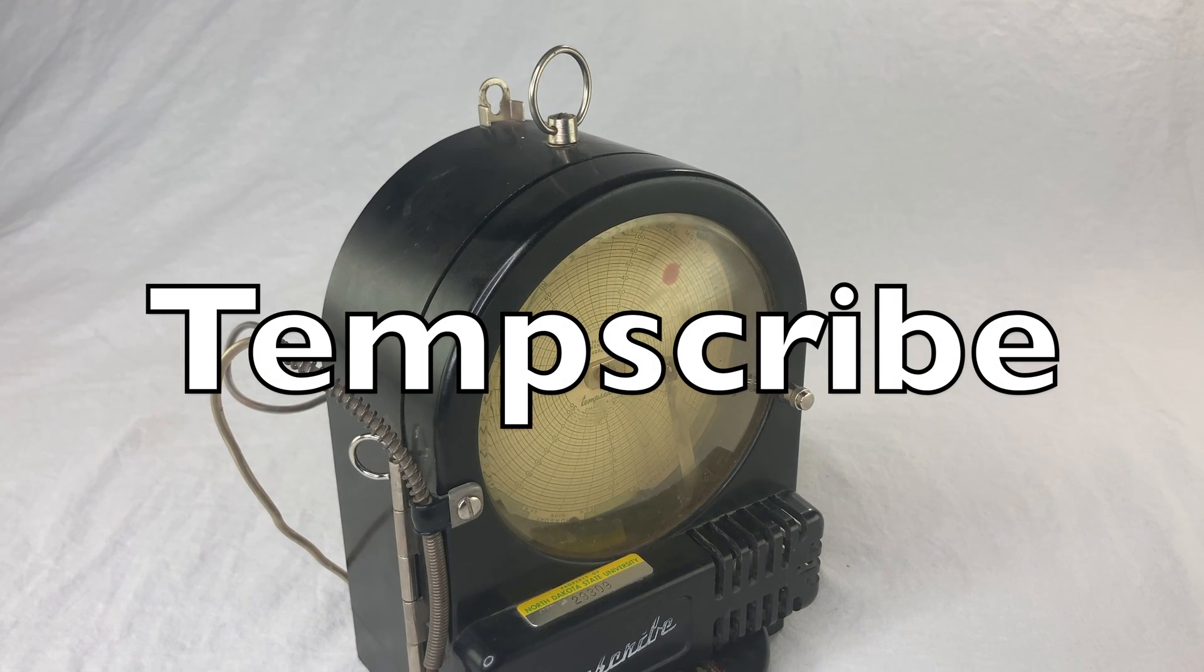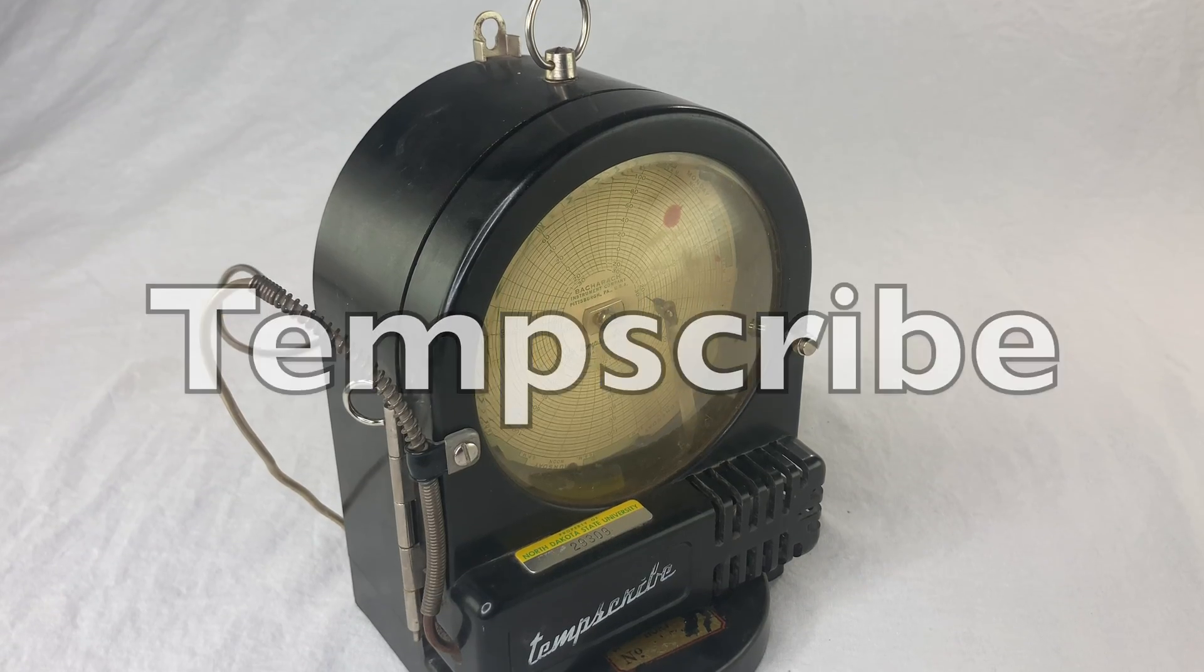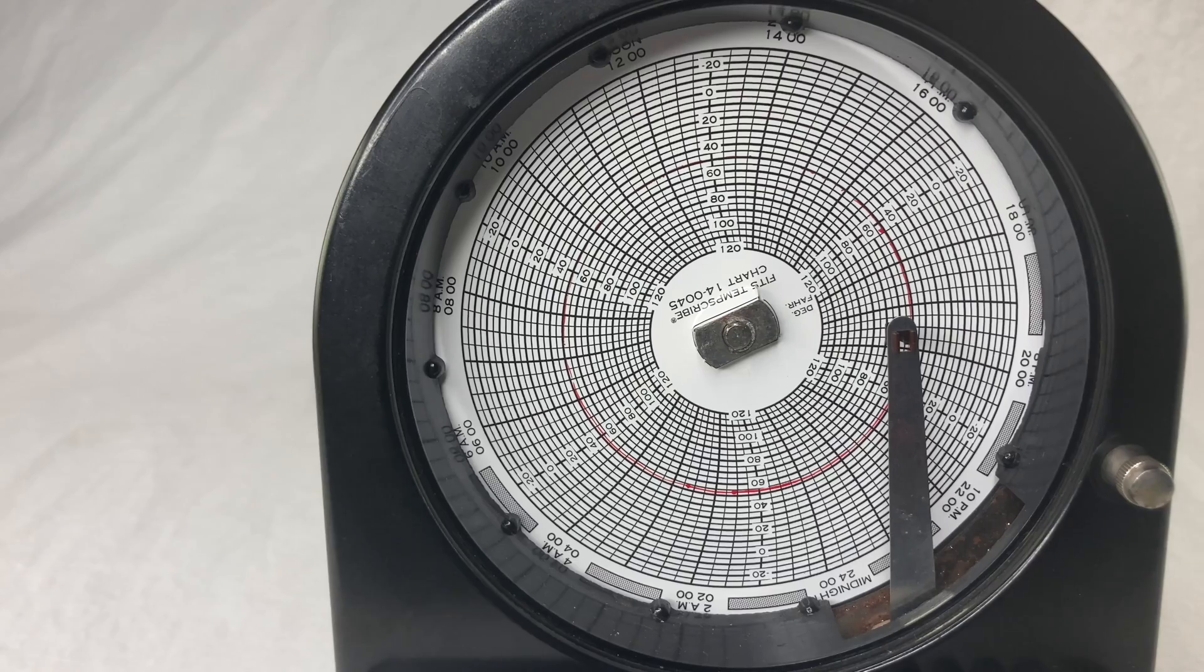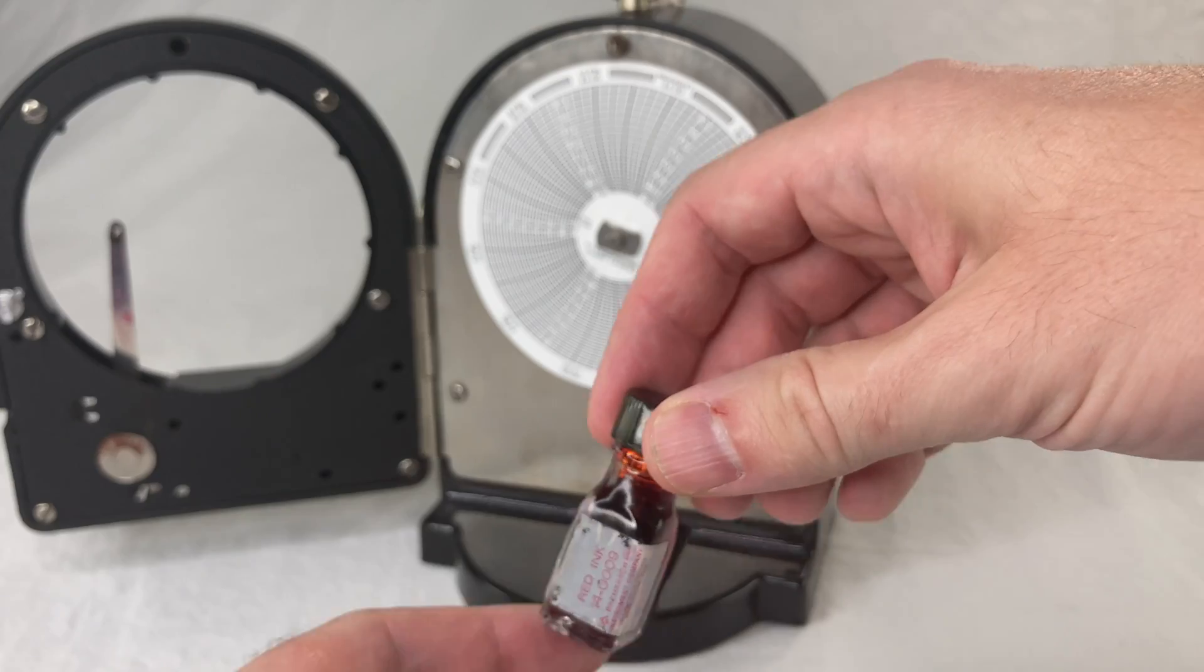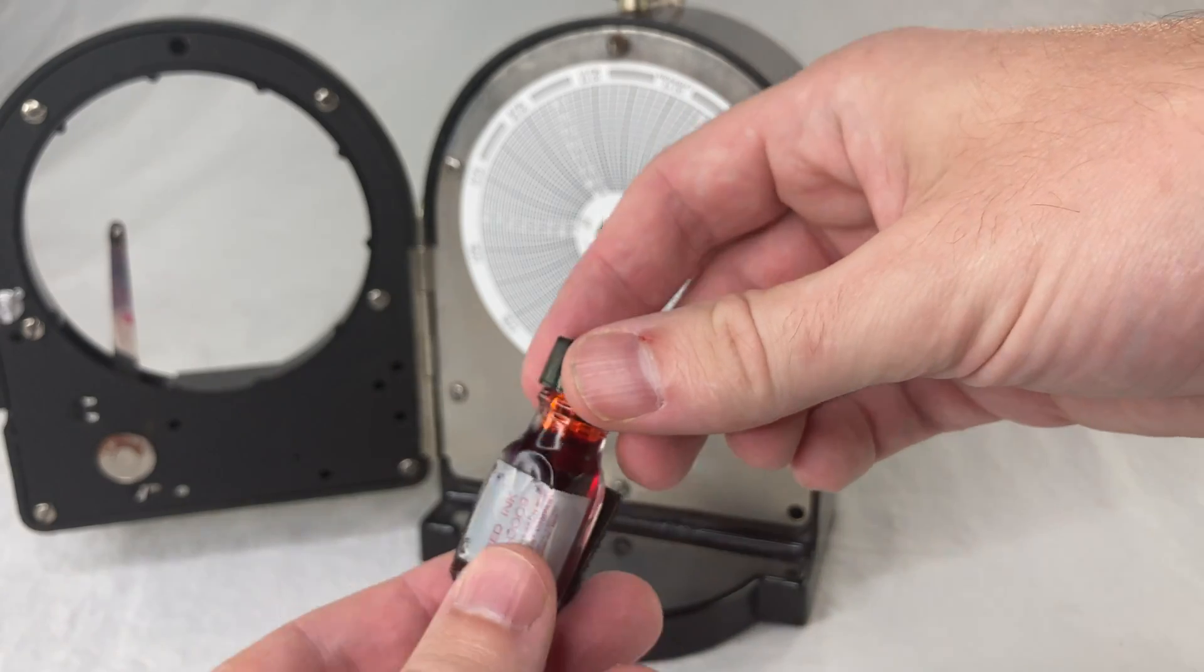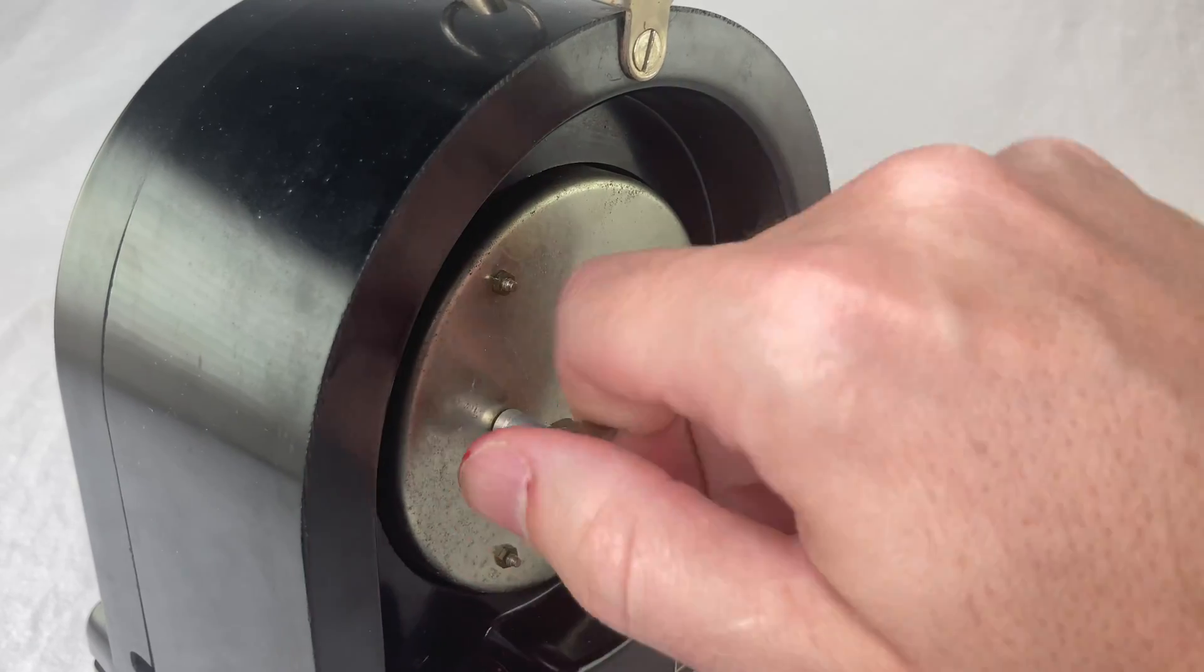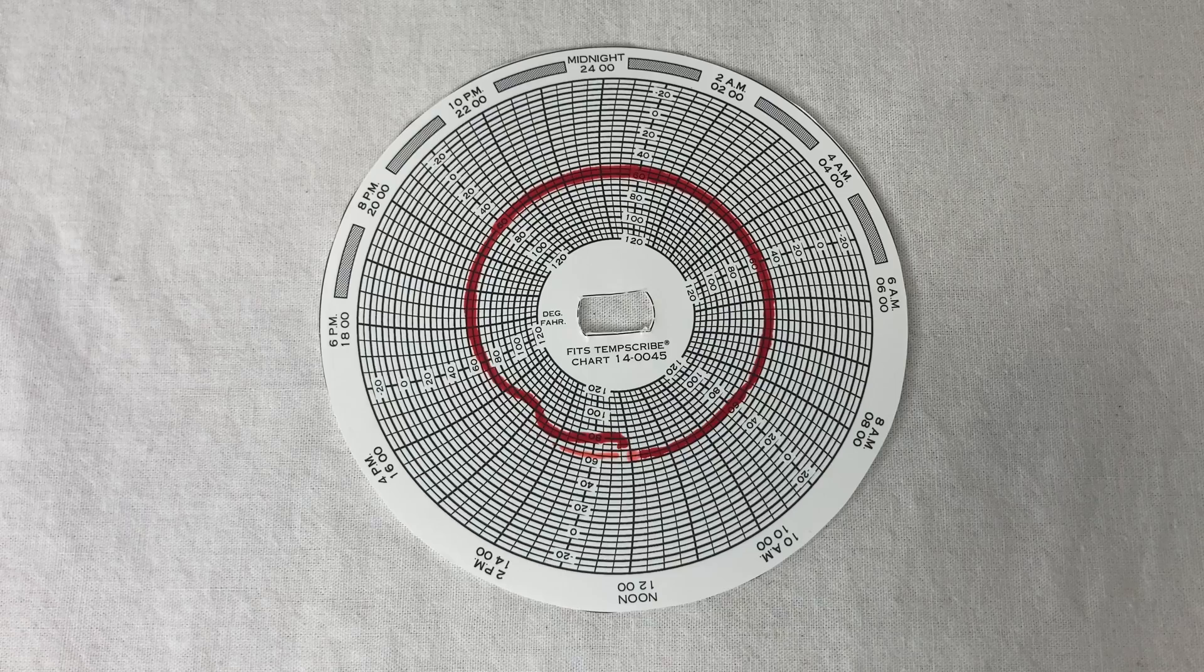This is the Tempscribe, made in the 1960s by the Bacharach Company. It's a wind-up thermometer. It has a little arm that goes back and forth according to the temperature, and it comes with a little bottle of red ink. Open the door, load in the special circular graph paper, wind this baby up, and the little arm will draw a chart of the temperature over the course of 24 hours.